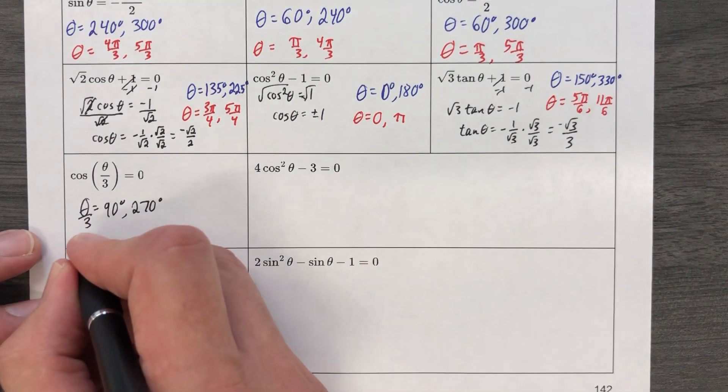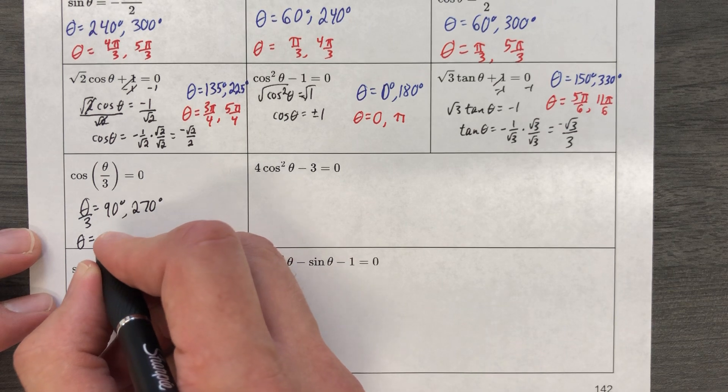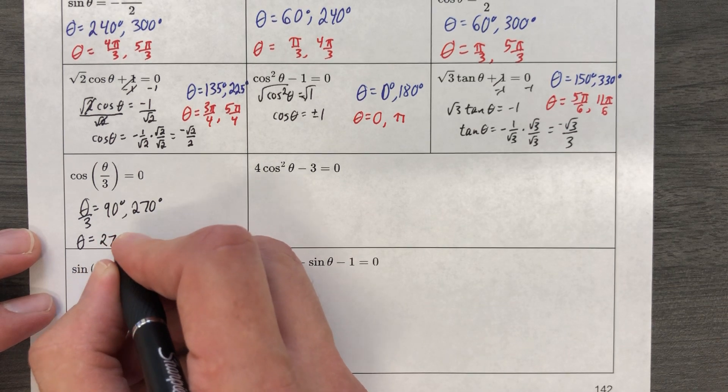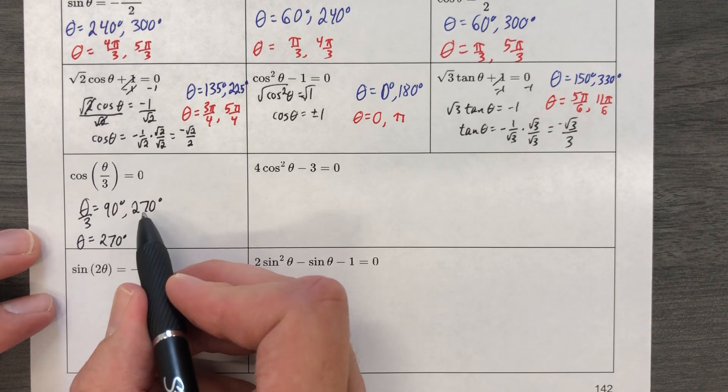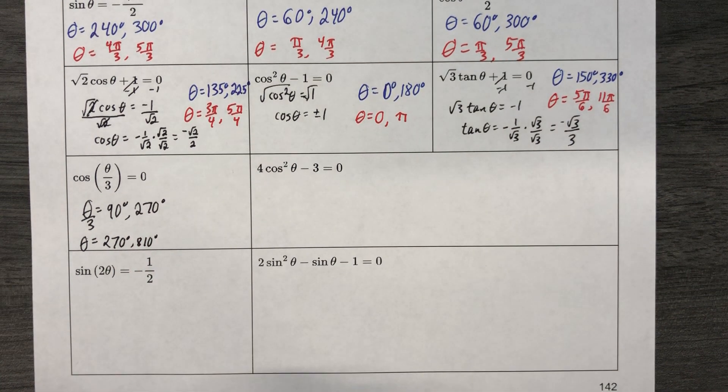So now theta equals 270 degrees, because I would triple that, and then when I triple that one, I'm going to have 810 degrees.